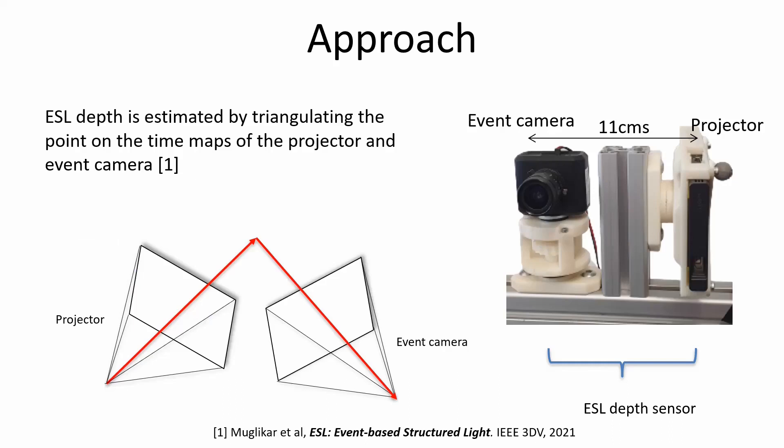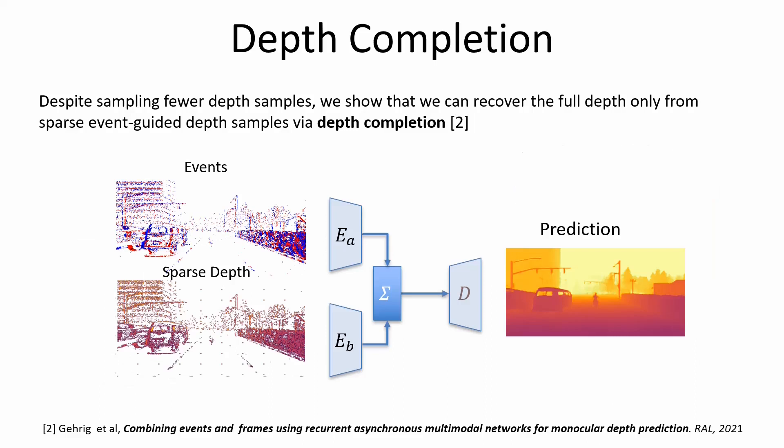Depth is computed by triangulating the point in the time map of the projector and the event camera. Despite sampling fewer depth samples, we show that we can recover the full depth only from the sparse event-guided samples using depth completion.